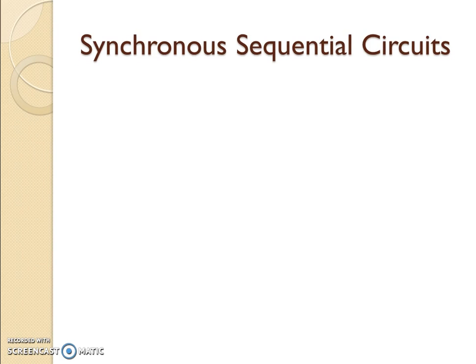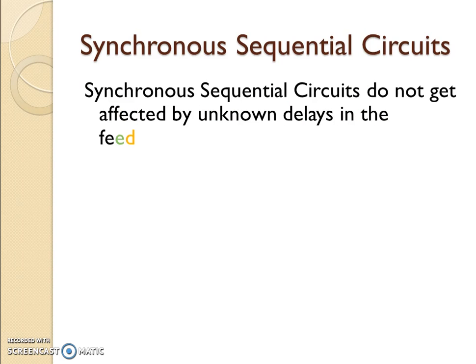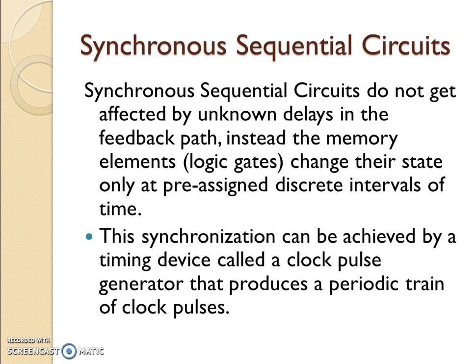Now for synchronous sequential circuits, the memory elements and logic gates change their states only at pre-assigned discrete intervals of time. This synchronization can be achieved by timing devices called clock pulse generators that produce a periodic train of clock pulses.